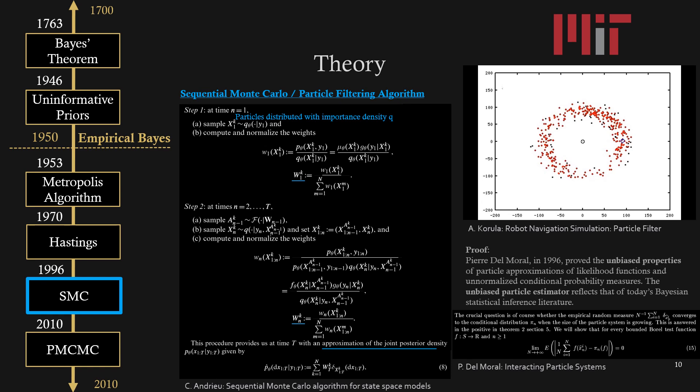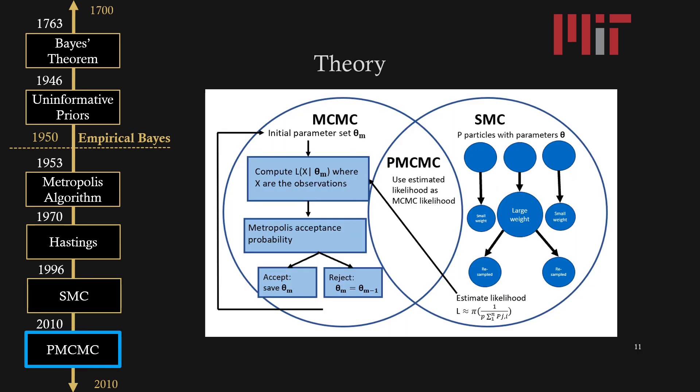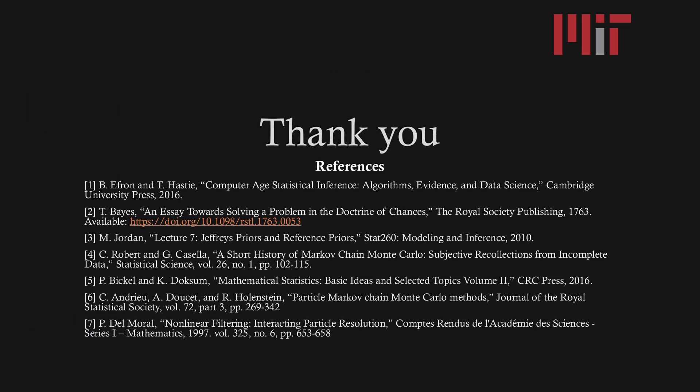Putting everything we learned together, around 2010 MCMC and SMC or particle filter can be combined to create PMCMC, where the particle filter estimates the likelihood L of x given theta, where theta is the parameter list and x are the observations. Then the Metropolis acceptance probability is determined, and these new estimates for the parameters are either accepted or rejected. This MCMC loop continues until convergence. Thank you for listening to my presentation and here are my references.